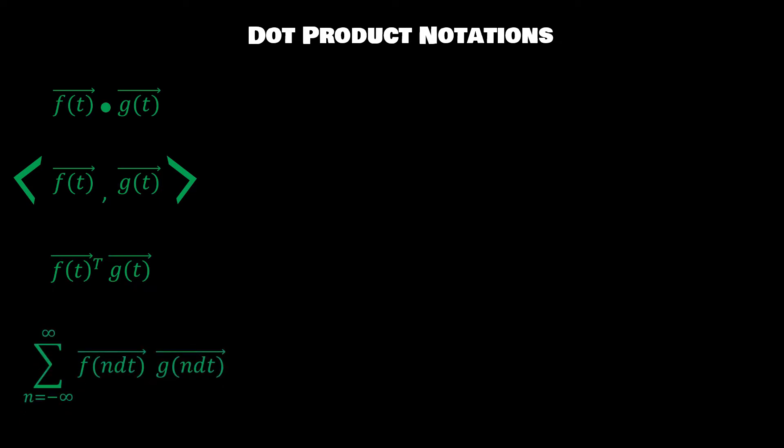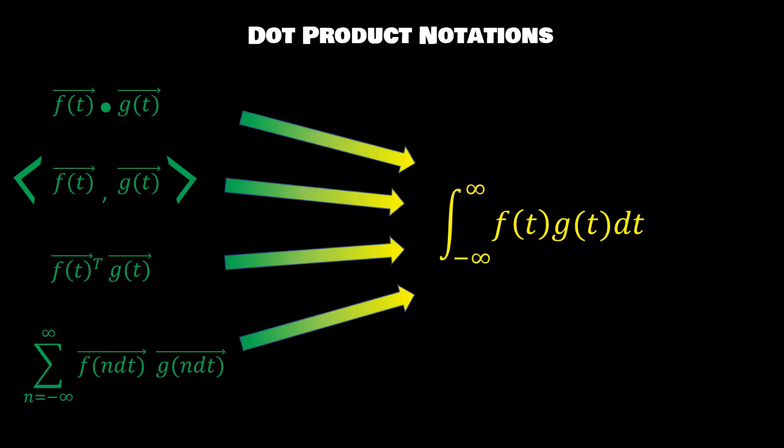Or if you want to be super, super explicit, you can write this big sigma sum notation. And all of these, they have a continuous counterpart. If our continuous function were not represented as a vector, you would write the dot product like this, taking the integral between the product of these two functions.